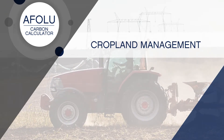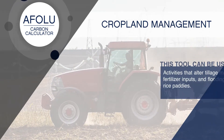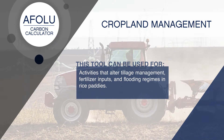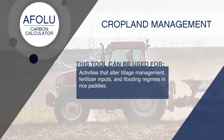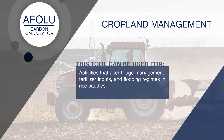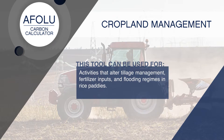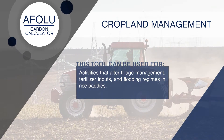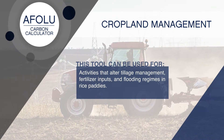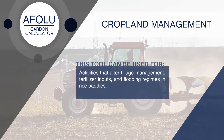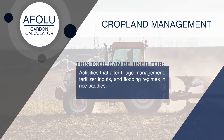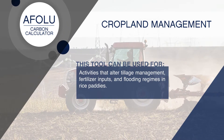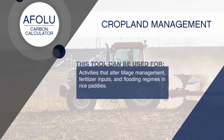The Afolu Carbon Calculator's cropland management tool can be used for activities that alter tillage management, fertilizer inputs, and flooding regimes in rice paddies. Although the calculator estimates reduced methane, nitrous oxide, and carbon emissions, all results are presented in tons of carbon dioxide equivalent.